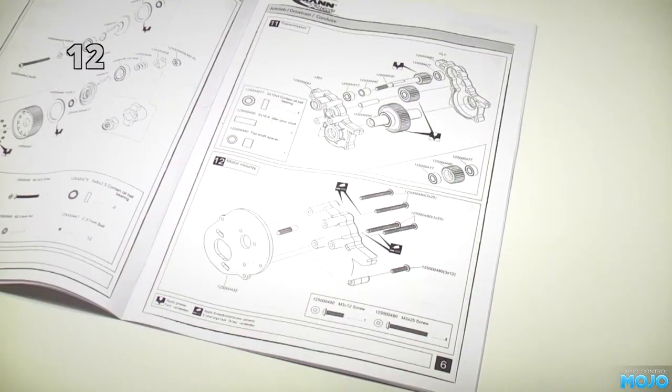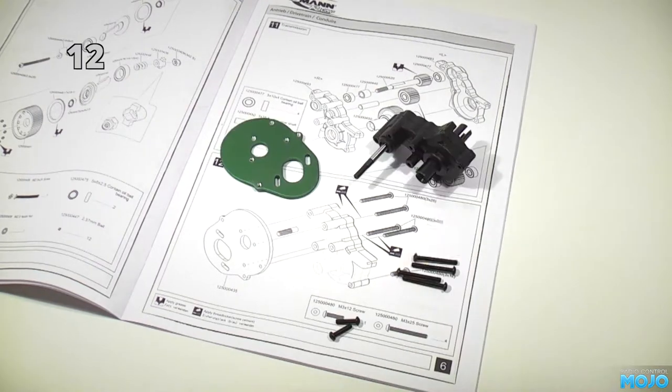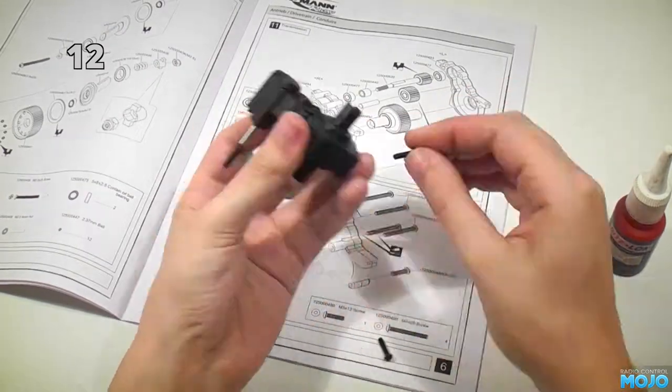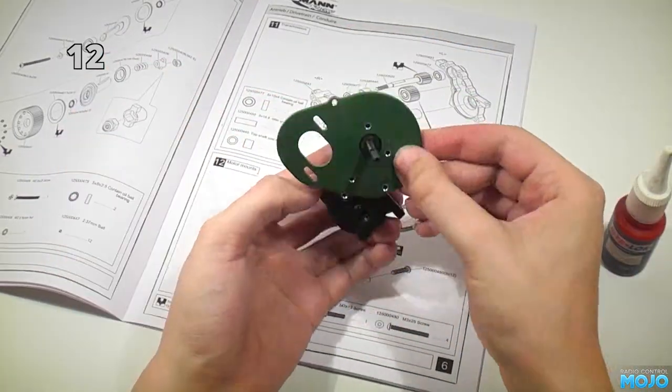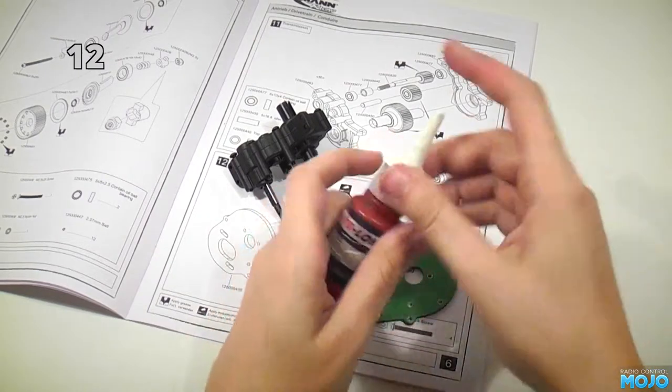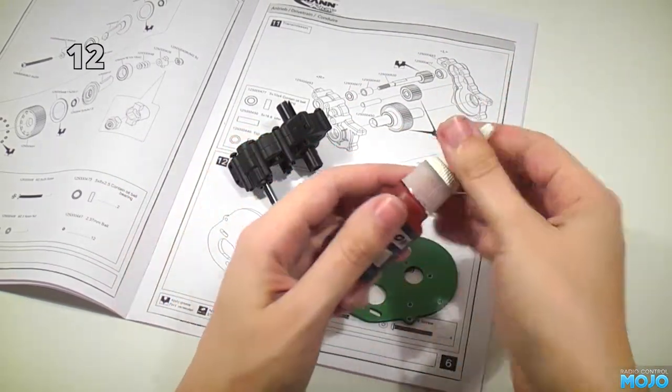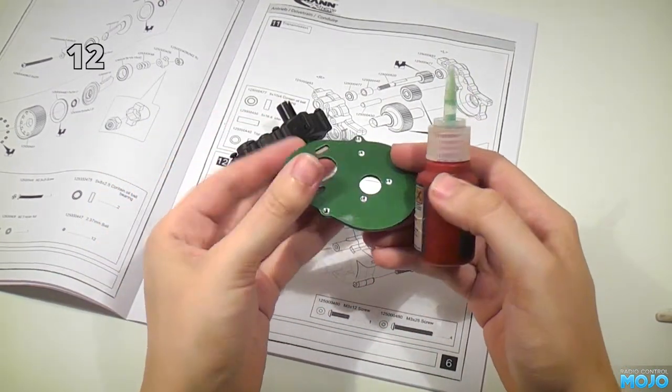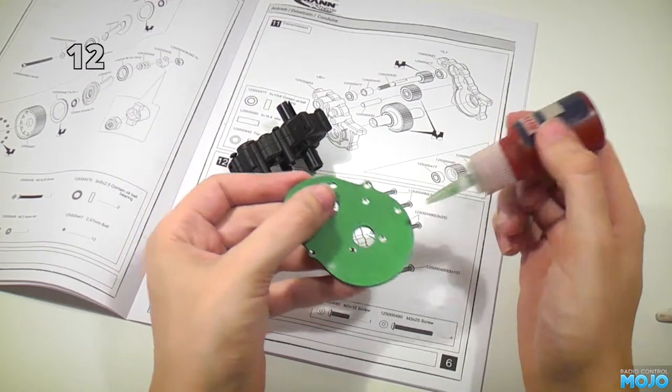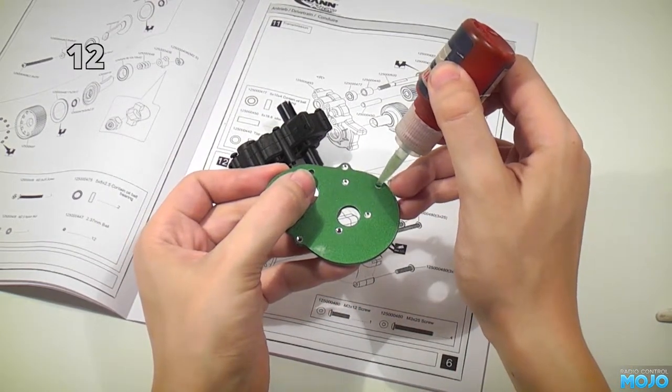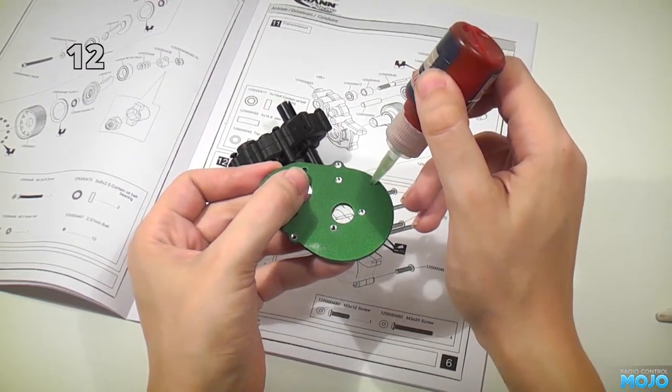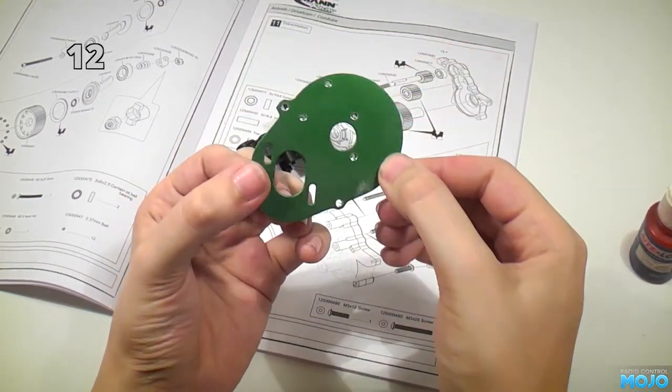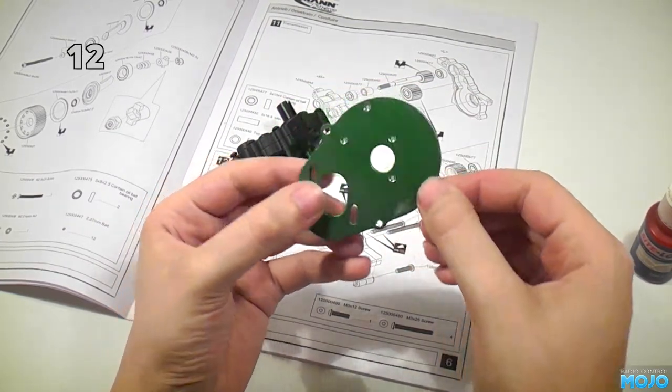Okay, next bit is fitting the motor mount. For these screws you need some thread lock, blue thread lock. Always give it a shake. And we're going to put it on the reverse side. Just a little bit. Wipe off the excess. Probably won't be able to see it, but there's still some thread lock in the holes.